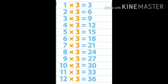Next one, three table. One threes are three. Two threes are six. Three threes are nine. Four threes are twelve. Five threes are fifteen.